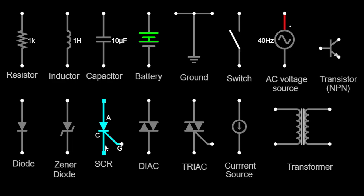The DIAC symbol consists of two diodes facing each other, sharing a common terminal. It is a bidirectional semiconductor device that can conduct current in both directions when triggered. DIACs are used in applications such as triggering triacs, controlling power levels in AC circuits, and generating timing signals.